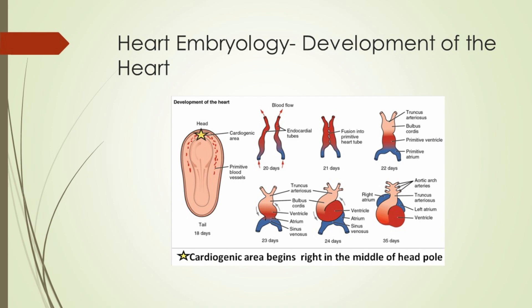Heart development begins very early in mesoderm within the trilaminar embryonic disc. The heart forms initially as a simple paired tube inside the forming pericardial cavity, which, when the disc folds, gets carried into the correct anatomical position in the chest cavity. Heart development, also known as cardiogenesis, refers to the prenatal development of the human heart.